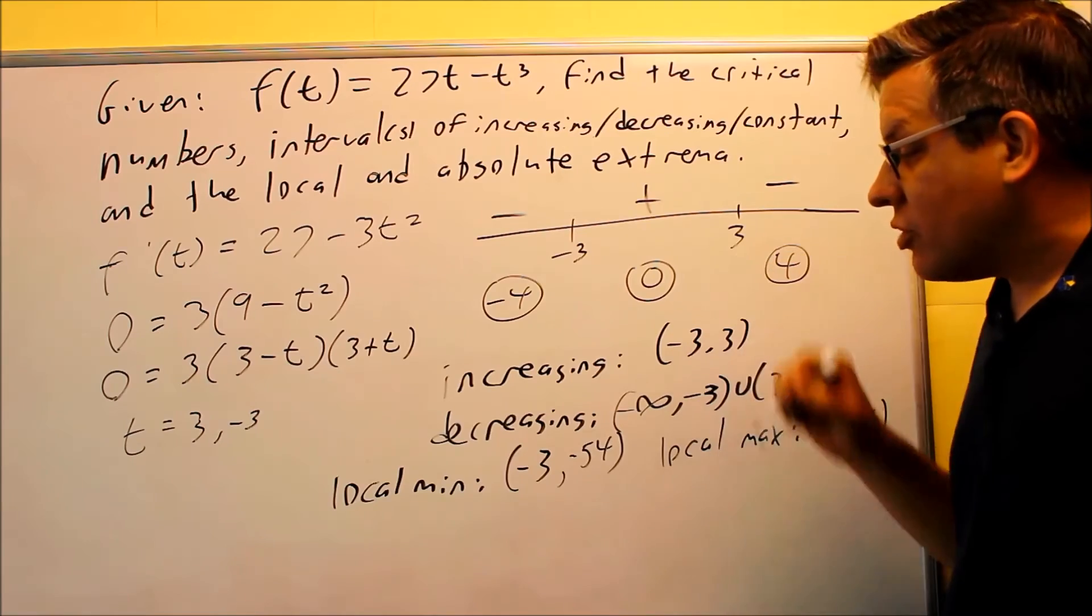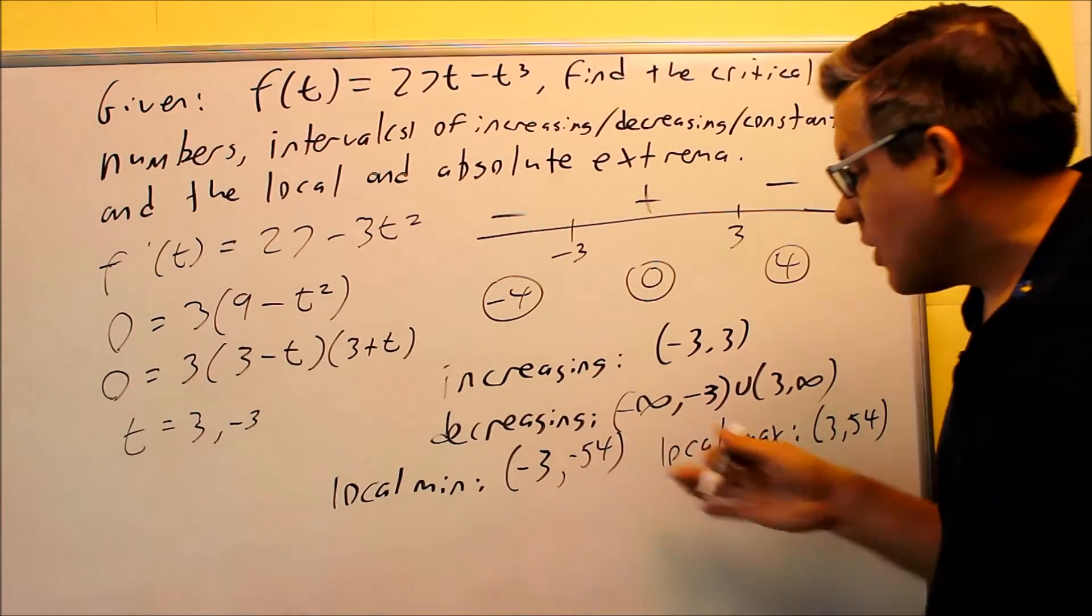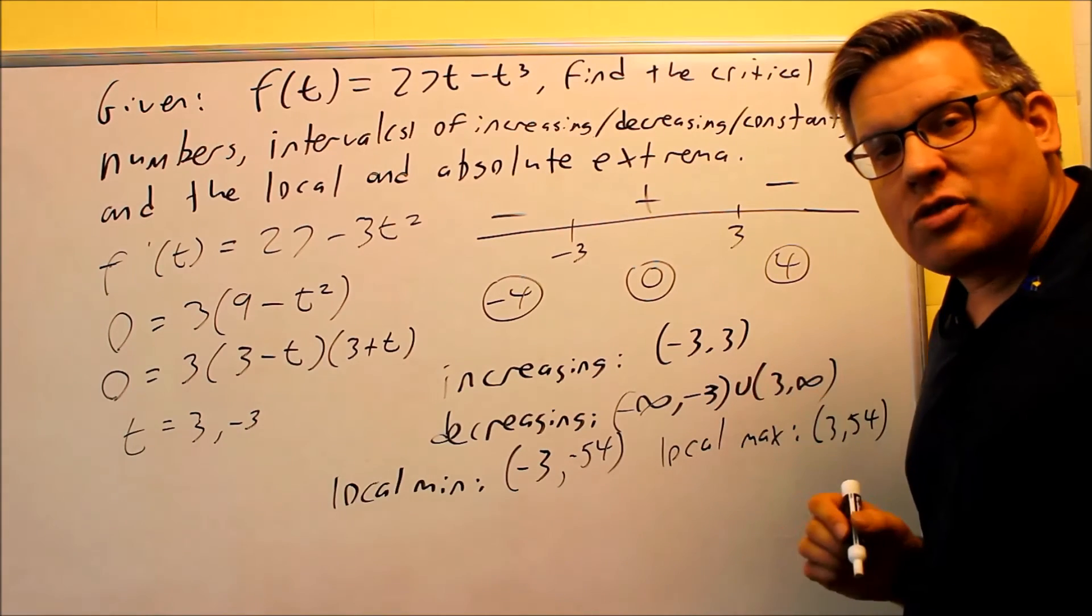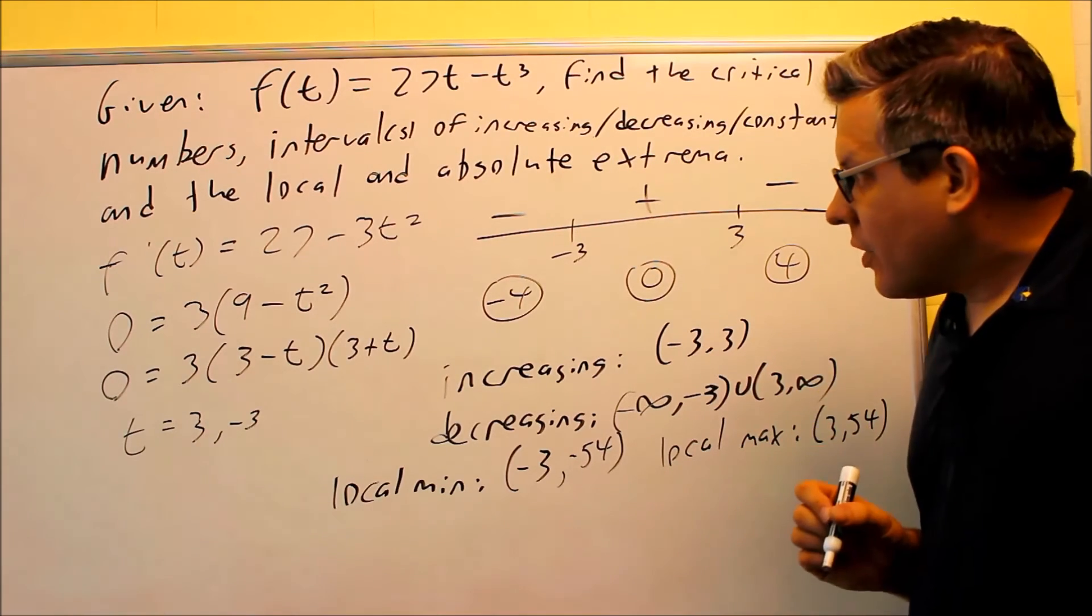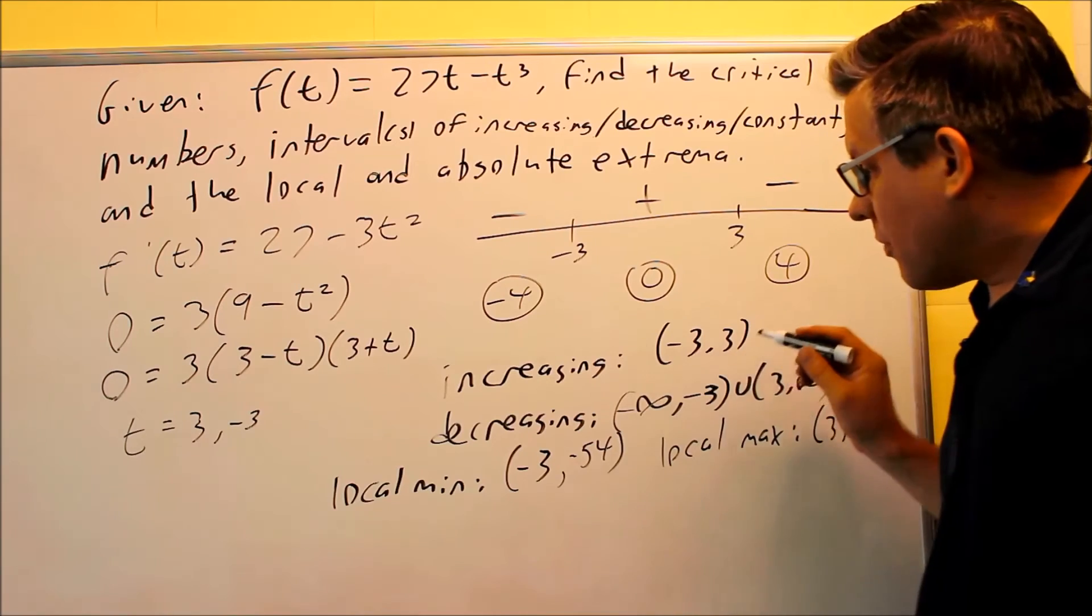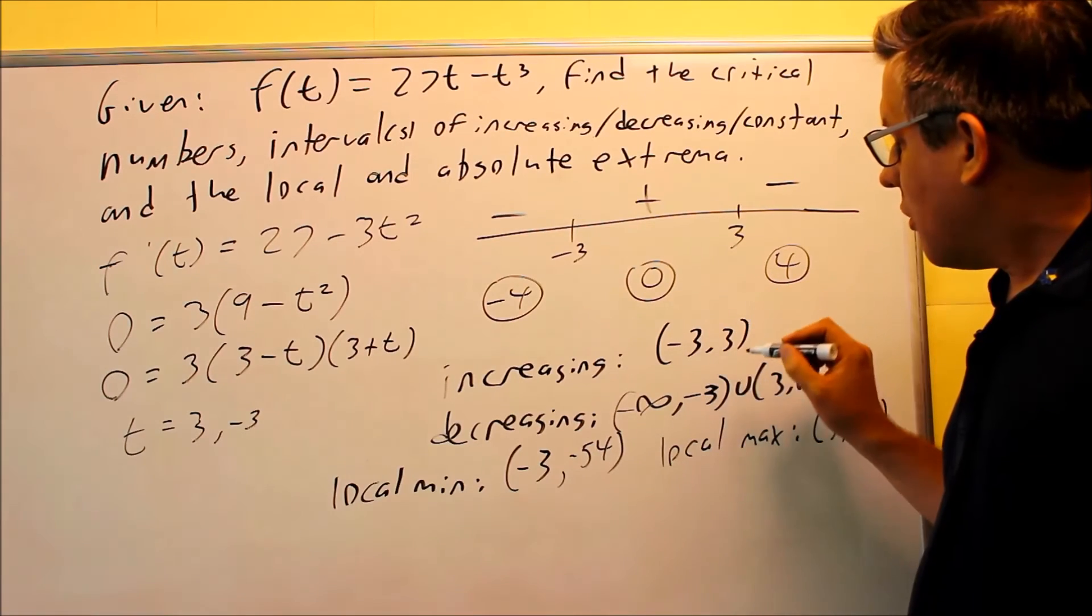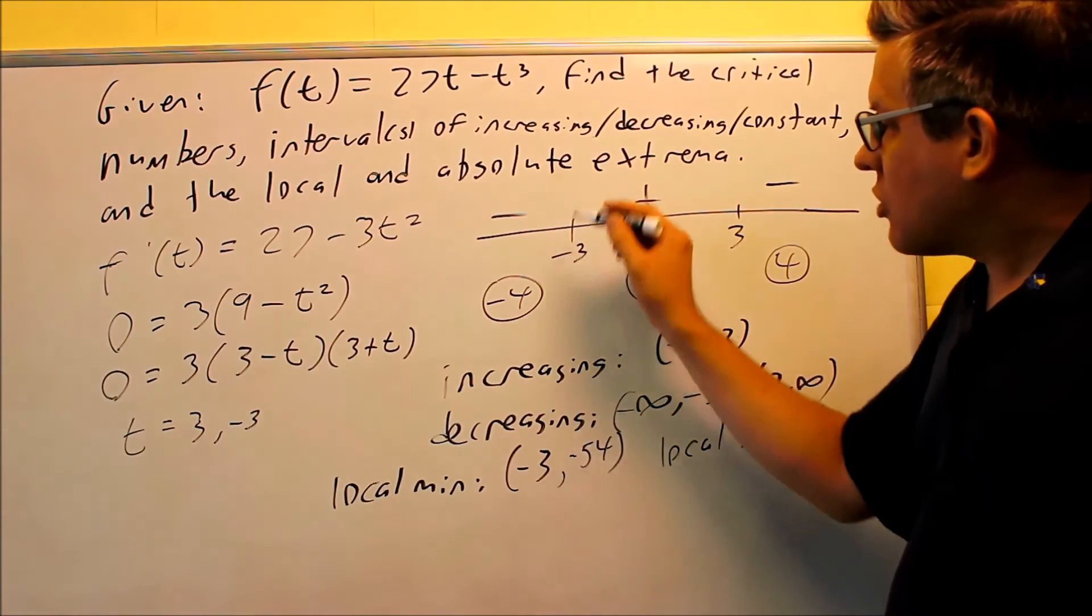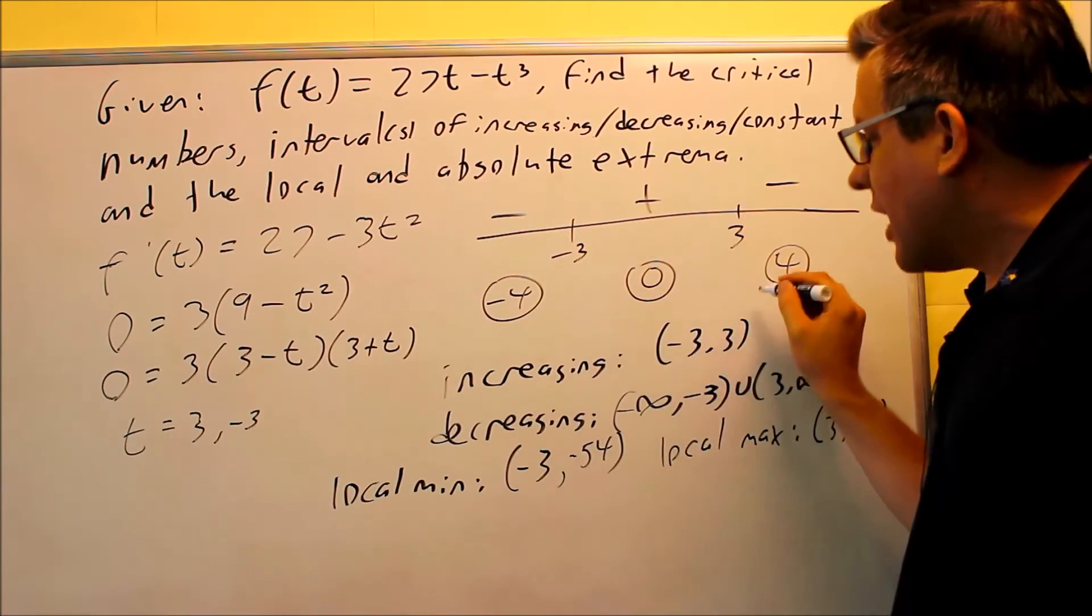So now we've got an increase and decrease and local min and local max. Now, they're also asking us for the absolute extrema. Now, let's think about what's happening here. It's increasing from negative 3 to 3, but then it's decreasing. It's going down. So we have a down, up, and a down situation.